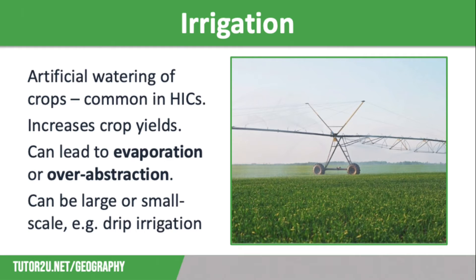The main pro of irrigation is it increases crop yields and therefore income, and obviously increases food security. However, large-scale systems are expensive to set up and can lead to over-abstraction, meaning less water for other users and potential drying out of lakes long term. It can also lead to waterlogging of soil through inadequate drainage, or salinisation — the build-up of salts.